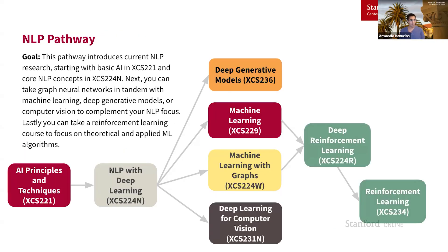Next is our NLP pathway — a pathway that tries to broaden and focus your knowledge around natural language processing techniques. For many of these pathways, we always encourage learners to take XCS 221 first, our AI fundamentals course, to get used to how our courses are laid out — writing proofs and coding with the local autograder we provide. Once familiar with the course framework, you can dive into our NLP with Deep Learning course, and from there branch into specialties like deep generative models, machine learning, machine learning with graphs, or even computer vision to tie your NLP expertise to different fields.